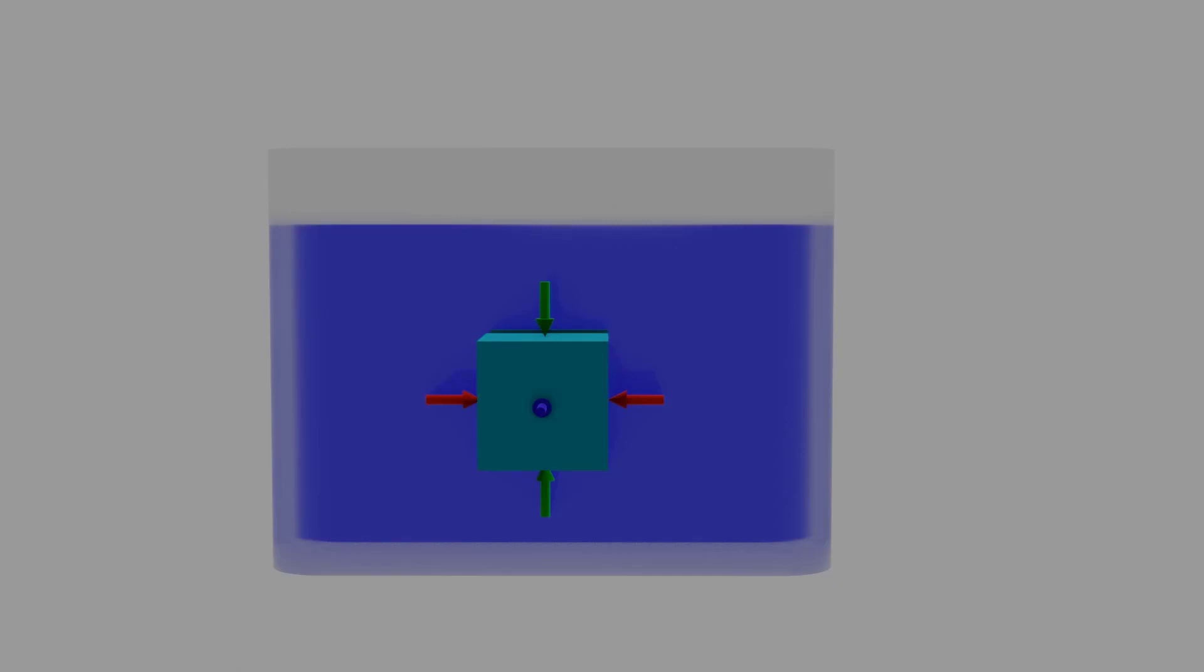Here the red arrow represents the pressure on the x-axis, the green arrow represents the pressure on the y-axis, and similarly, the blue arrow represents the pressure on the z-axis.